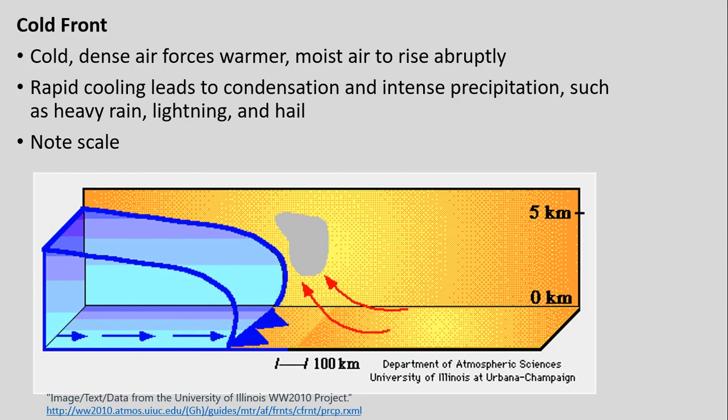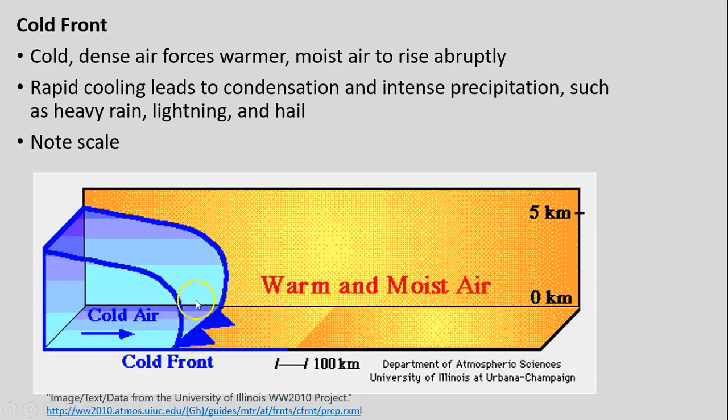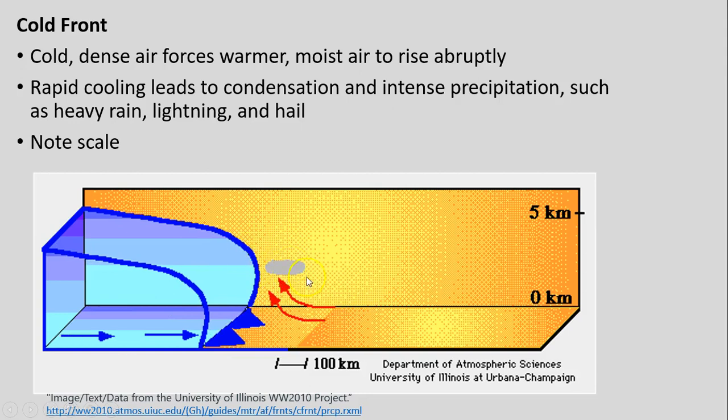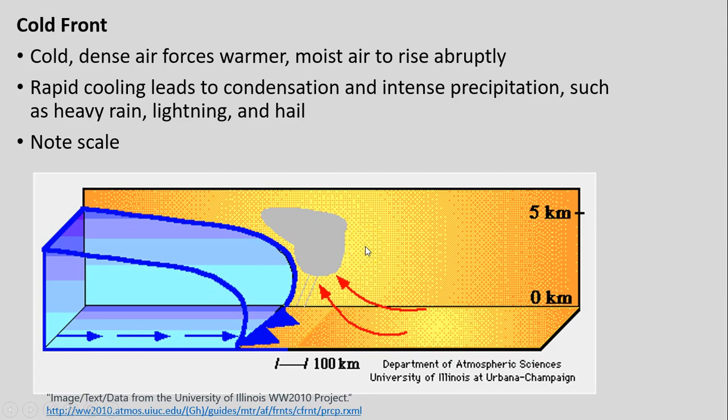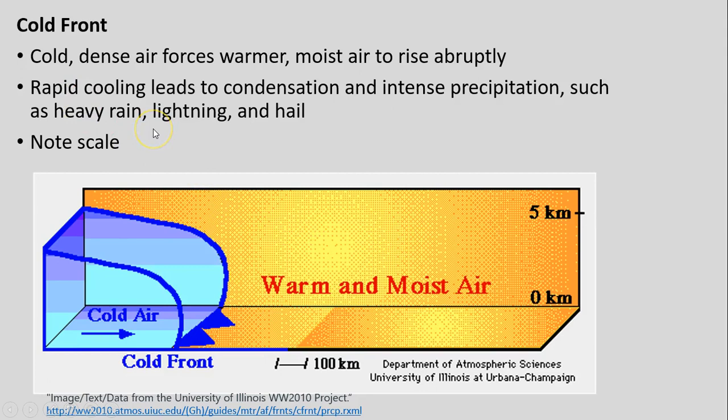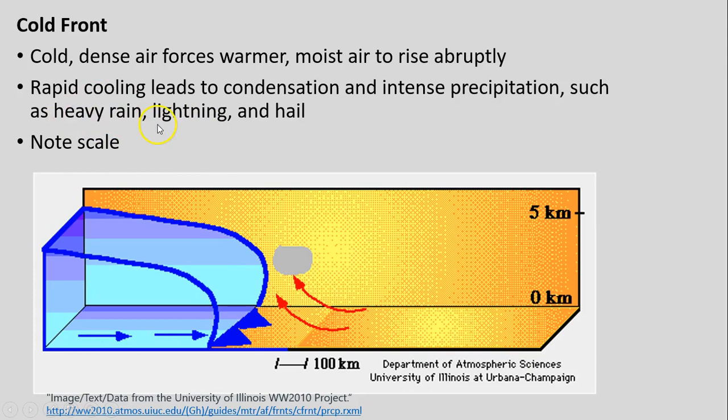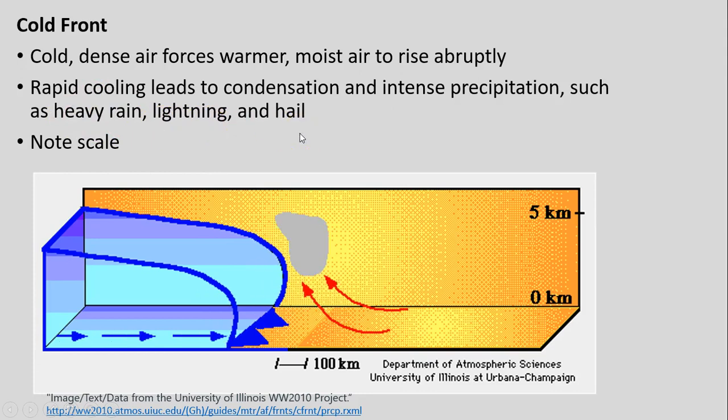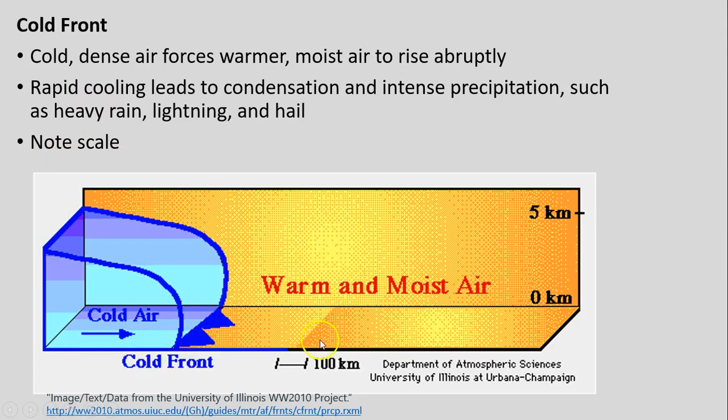A lot of that moisture that was holding can no longer be held within that air, and that's where we get a lot of very big pop-up thunderstorms and strong storms associated with this type of lifting mechanism. It shows here showers and thunderstorms that can occur very rapidly because of this—things like heavy rain, lightning, and hail, as we'll see with our video on severe weather. Note our scale as well here.